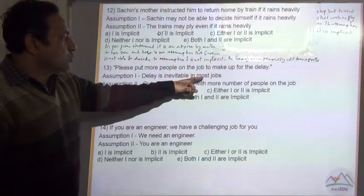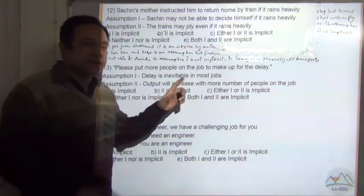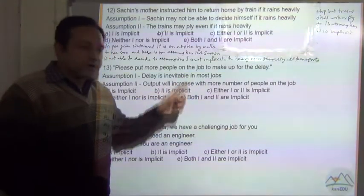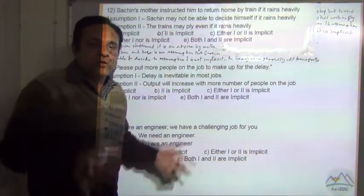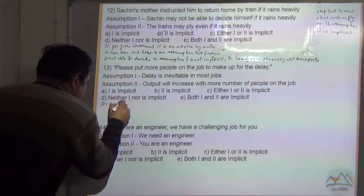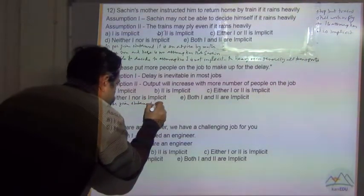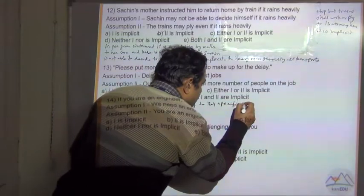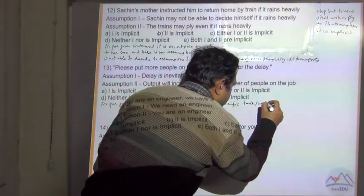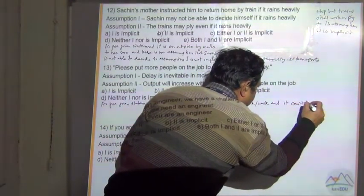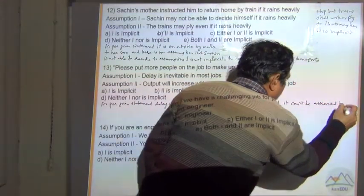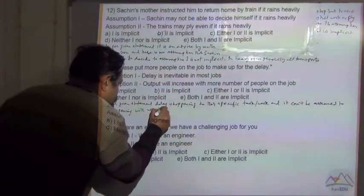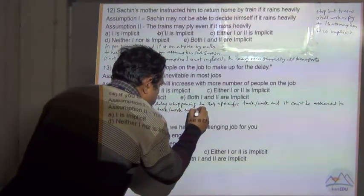Assumption 1: Delay is inevitable in most jobs. This is a general statement. This is a general assumption which does not apply. So this must be happening only for a specific work or specific project. It cannot be applied to all. The all work do not delay. As per given statement, delay is happening to that specific task or work and it cannot be assumed to be happening with all tasks or work. So assumption 1 is not implicit.